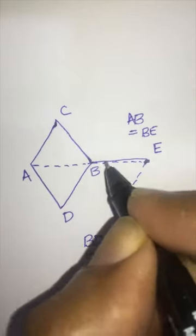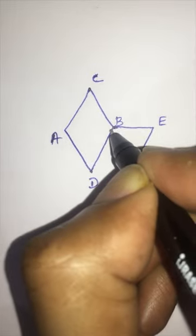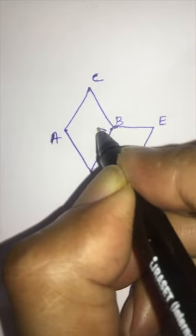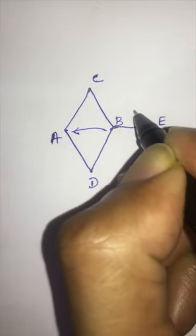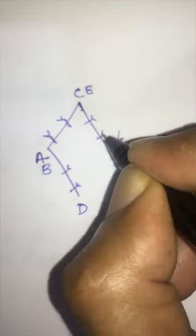DBEF is the rhomboid flap or Limburg flap. It is raised and moves in such a way that point B is sutured to point A and point E is sutured to point C. The point C is the promontory. The final suture line will be like this.